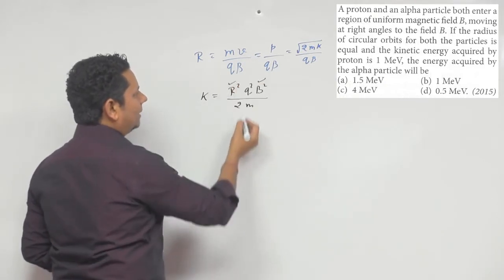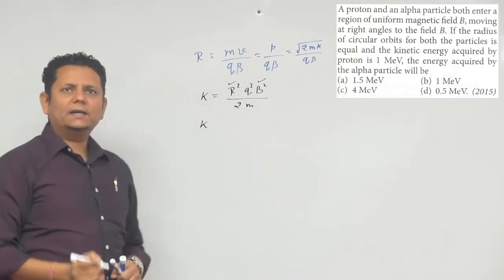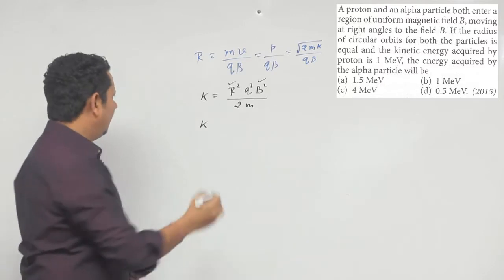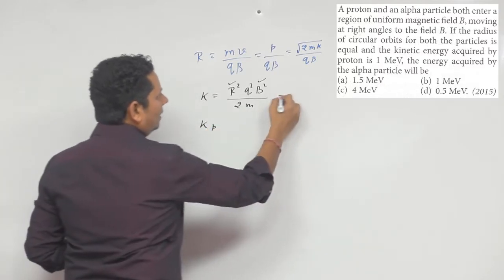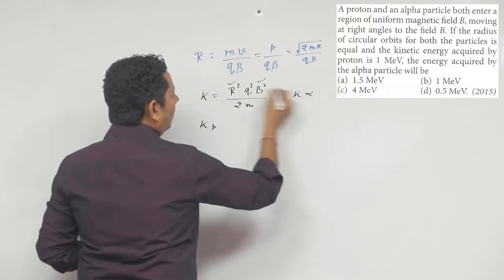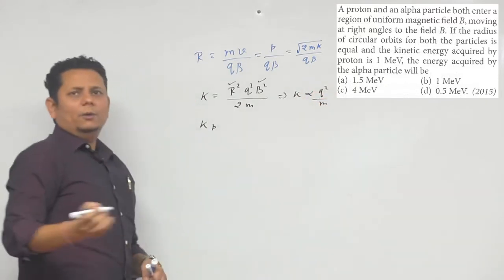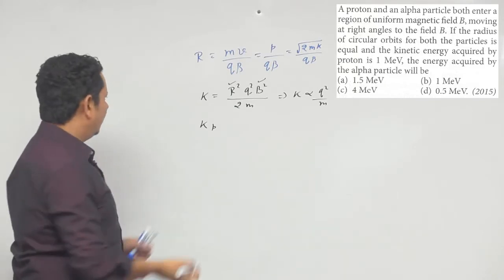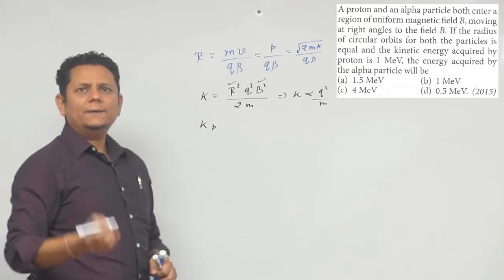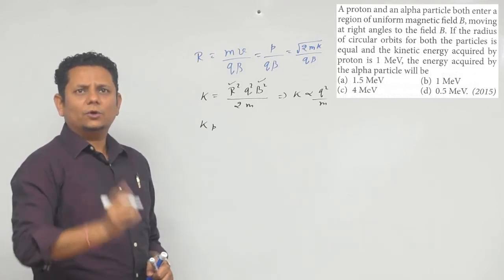Aur aapki jo do particles hain - ek proton aur ek alpha particle. So hum yahan likh sakte hain, isko implies karta hai ke kinetic energy will be proportional to q²/m. Yahan aapki proportionality dikh rahi hai. Aapne proton ki energy di hui hai,